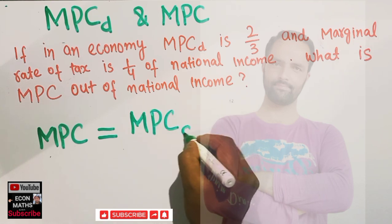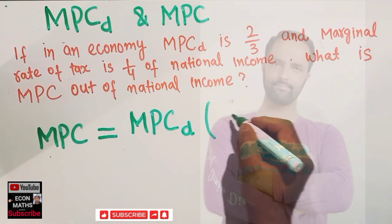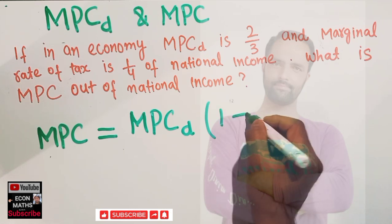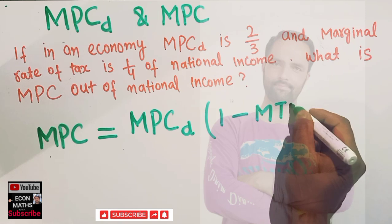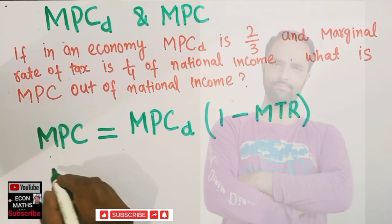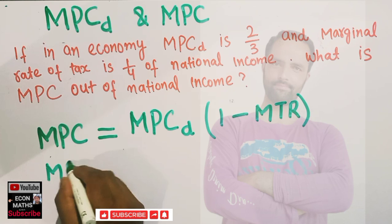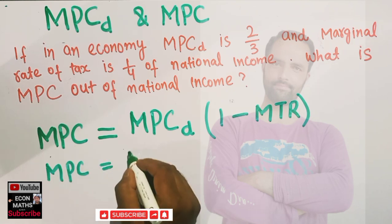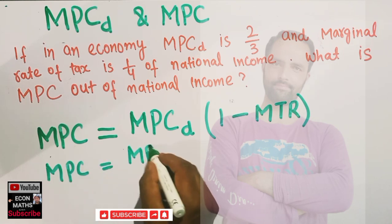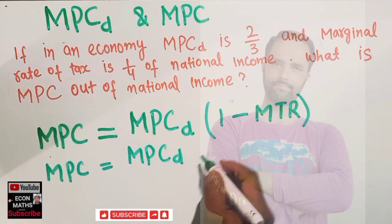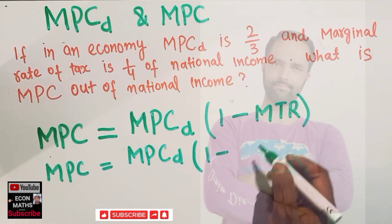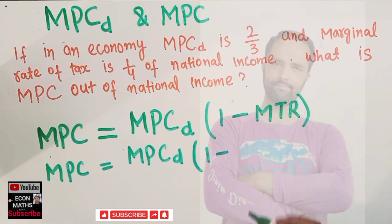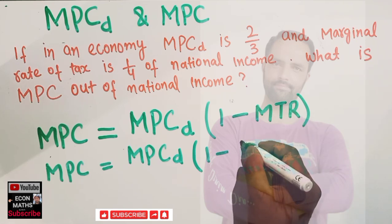disposable income times (1 minus marginal tax rate), or marginal rate of tax. So MPC equals MPCd times (1 minus marginal tax rate). Let us write it here: (1 minus marginal tax rate), let's denote it by t.